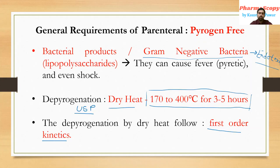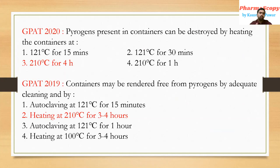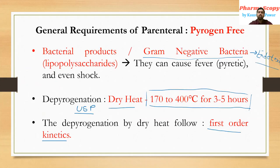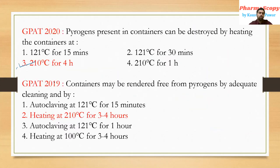Based on this concept, in GPAT 2020 and GPAT 2019 there was one question each. In GPAT 2020, the question was: 'Pyrogens present in containers can be destroyed by heating the containers at?' — the correct answer is 210 degrees Celsius for 4 hours. As the depyrogenation limit is 170 to 400 degrees Celsius for 3 to 5 hours, 210°C for 4 hours falls within range.